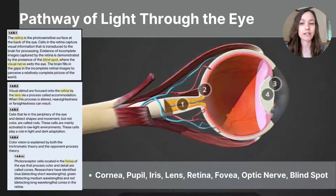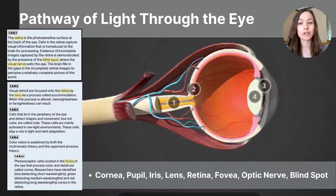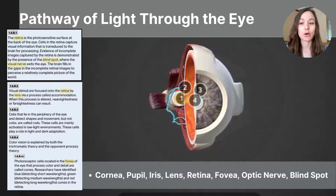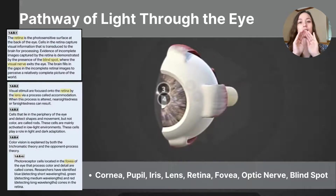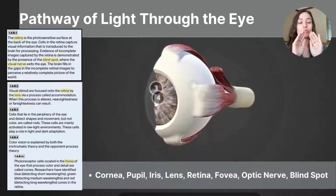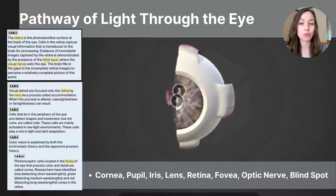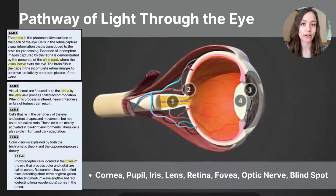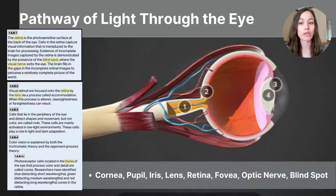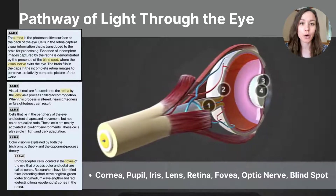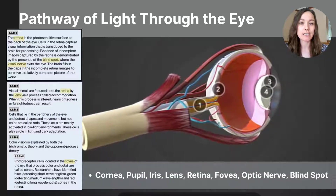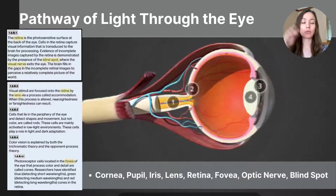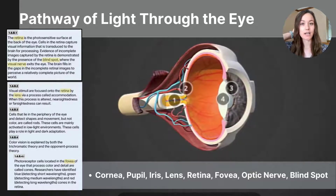After light passes through the lens, it travels through a clear gel in the center of the eye and then reaches the retina, labeled with the number two on our 3D model. The retina is a layer of light-sensitive tissue around the back of the eye, and it contains photoreceptors — cells that detect light and convert it into electrical signals. These signals are sent to the brain through the optic nerve, labeled number one. Note that the CED calls it the visual nerve. The optic nerve carries the electrical signals to the brain's occipital lobes to be processed and interpreted.